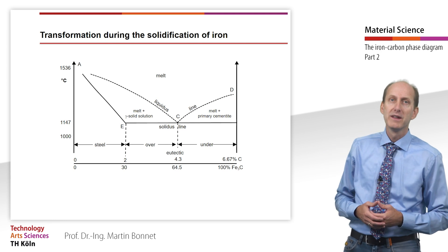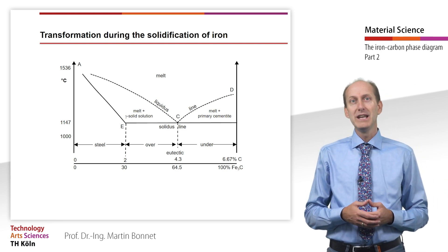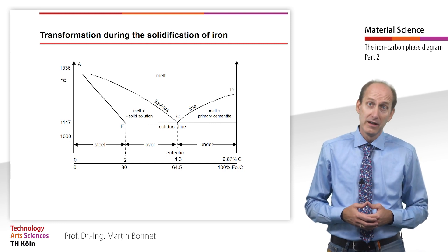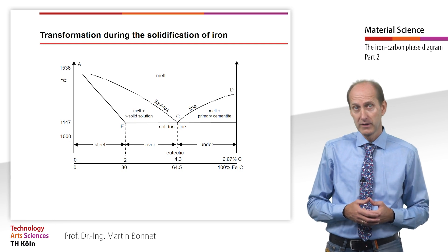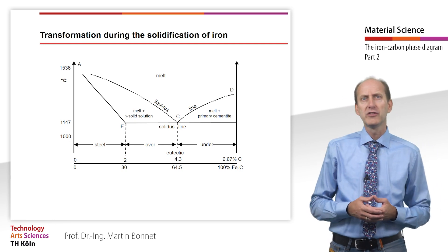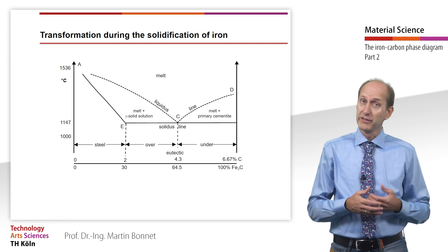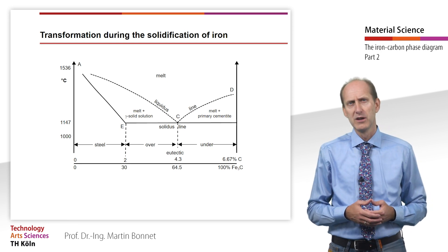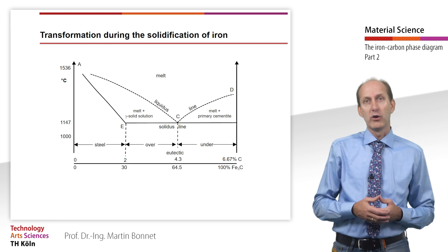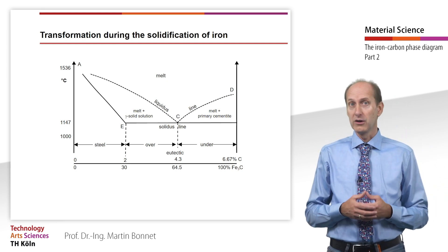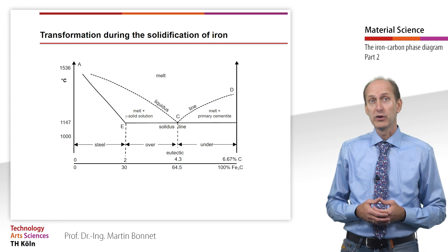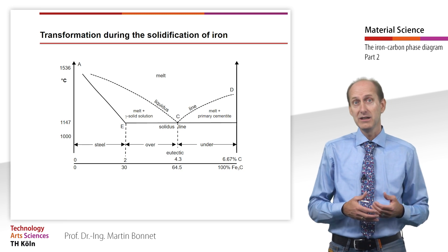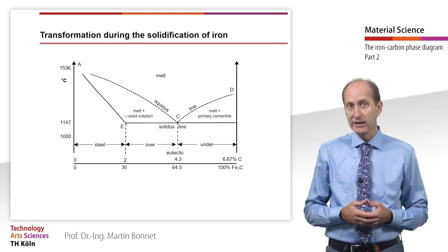Let us begin by looking at the solidification range, leaving aside the peritectic for the time being. At 4.3% there is a eutectic point. The carbon dissolves in the material and reduces the melting point of pure iron from 1536°C to 1147°C. We have already discussed that eutectic or near-eutectic alloys are particularly well suited for casting, since they are characterized by a low melting temperature and ductility, and do not easily segregate or shrink.